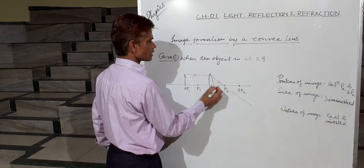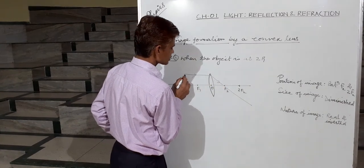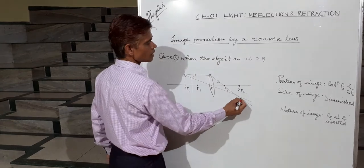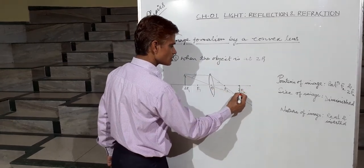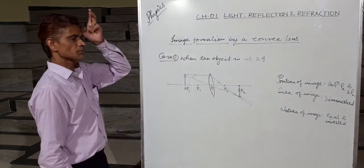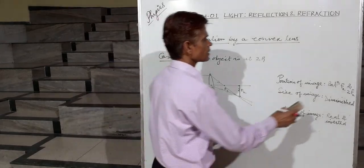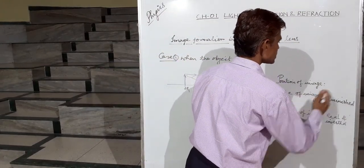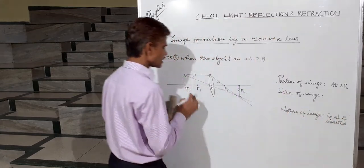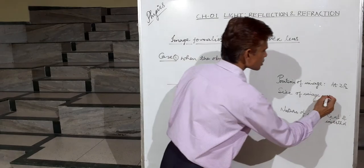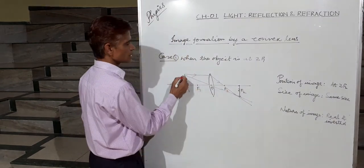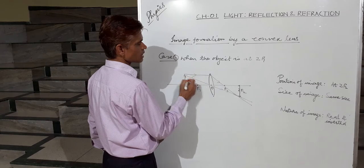Take another ray through the optical center — this ray after refraction goes as it is without deviation. These two rays meet at a point, so the image is formed at 2F2. The size of the object and image is the same, so the image is the same size.